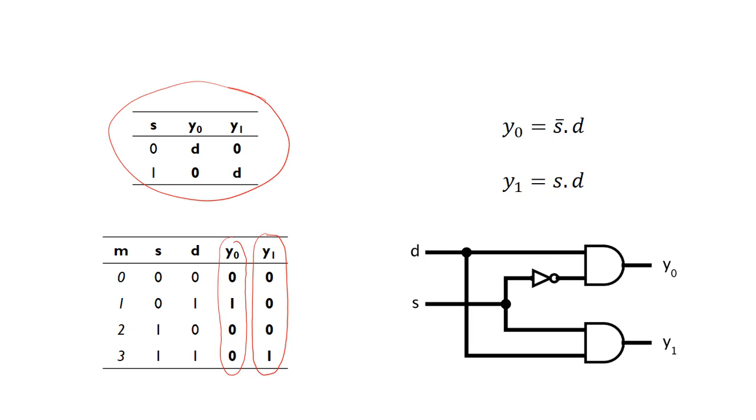This truth table outlines the behavior of the circuit. When the select bit is 0, d is sent to y0. When the select bit is 1, d goes to y1. In both cases, the other output is just going to be 0.